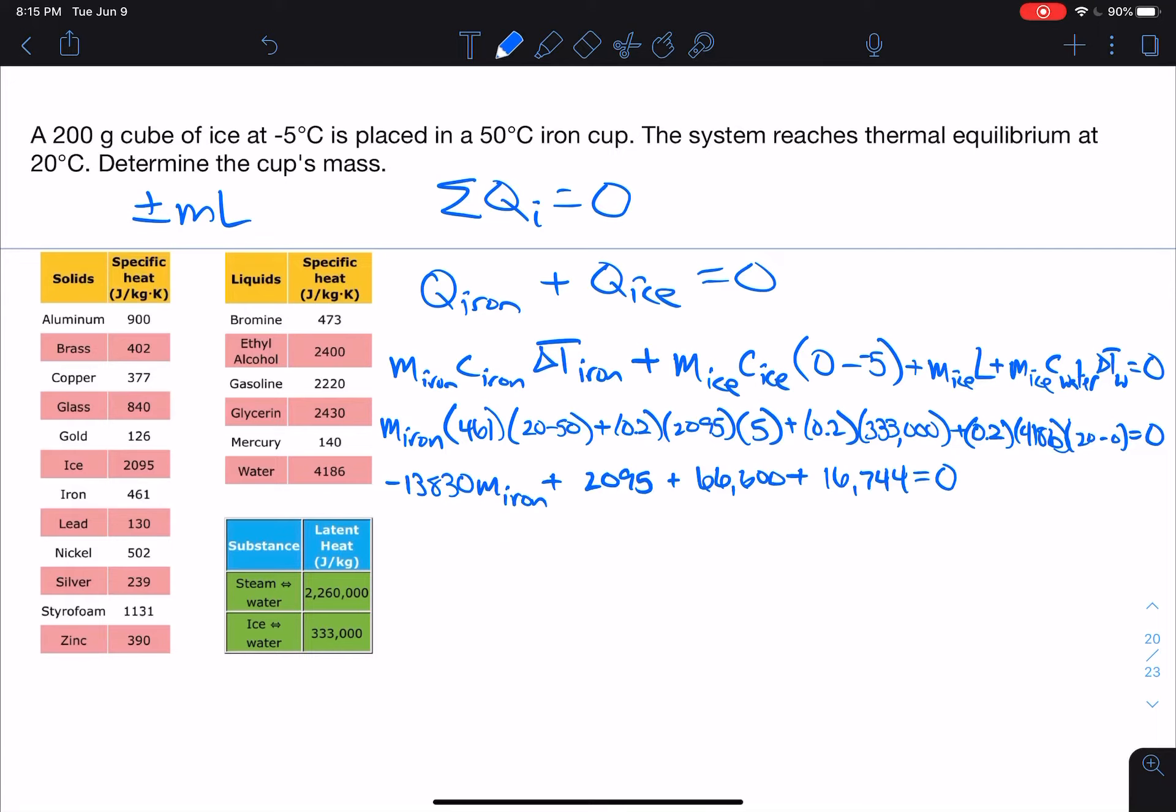So I'm solving for the mass of iron. So obviously I combine all these terms. I'm going to end up with the mass of iron. When I add those all together, I get 85,439. I'm going to end up dividing that by 13,830. And so I'm going to get that the mass of the iron cup is 6.178 kilograms. And there you go, that's all there is to this.